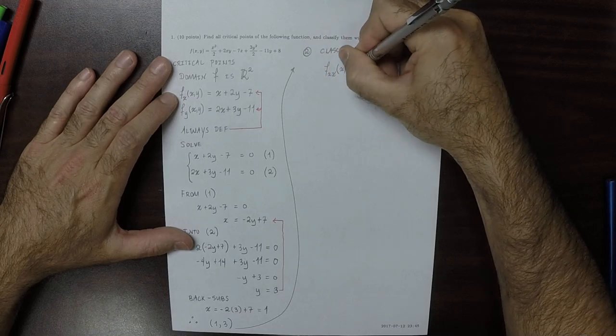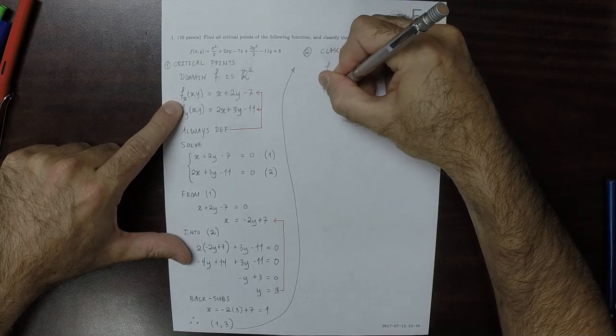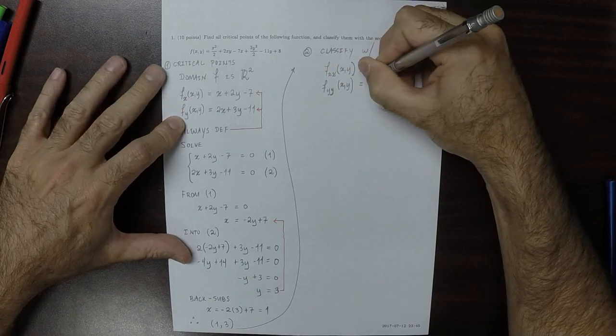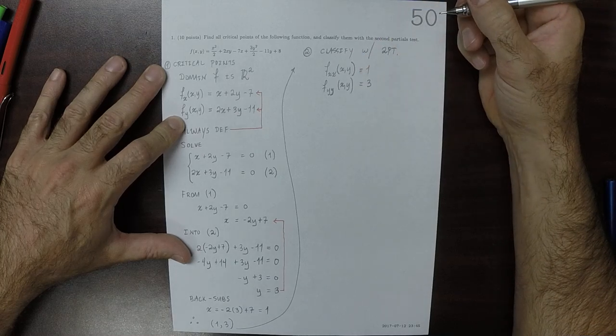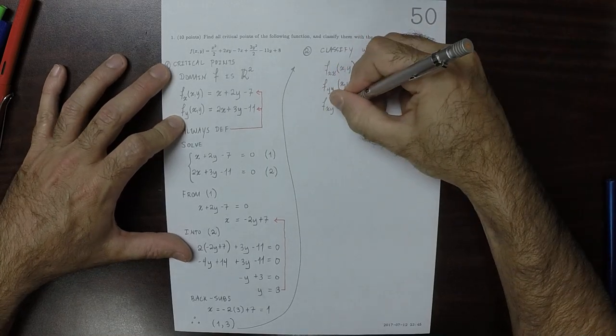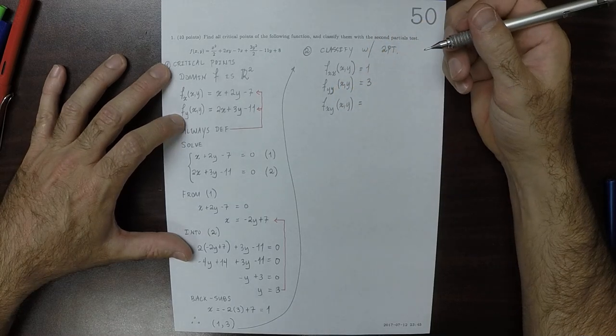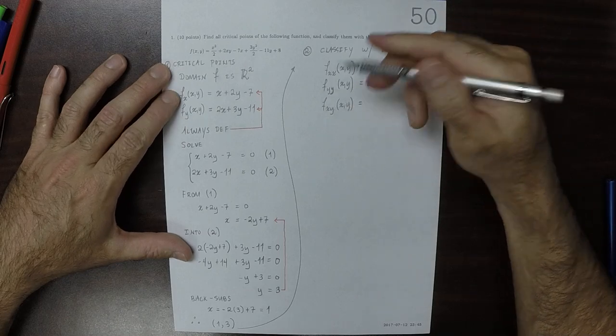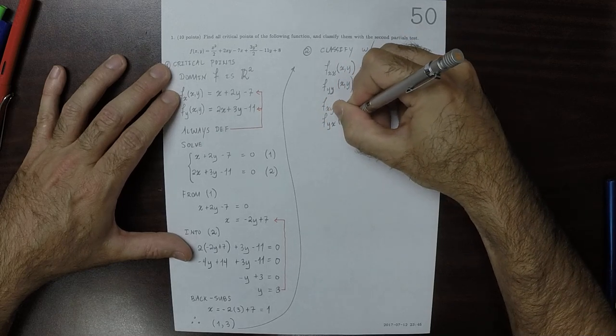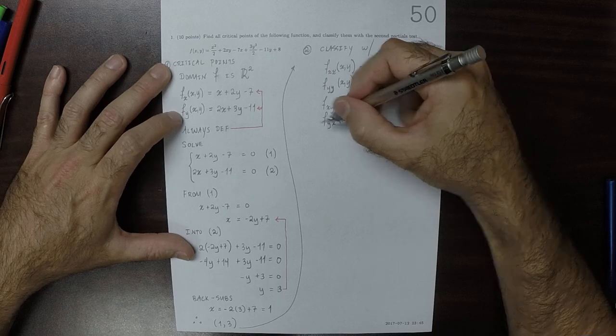The x, x partial is 1. The y, y partial is 3. The x, y partial is, so x and then y, that would be 2. And the y, x partial is y and then x, also 2.